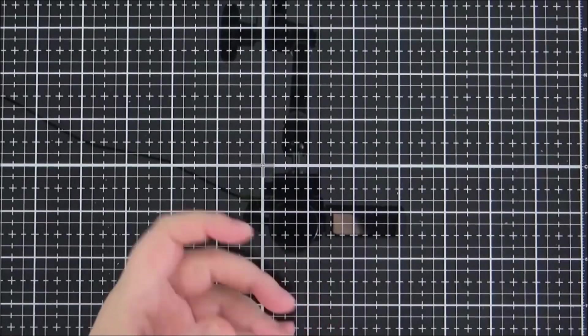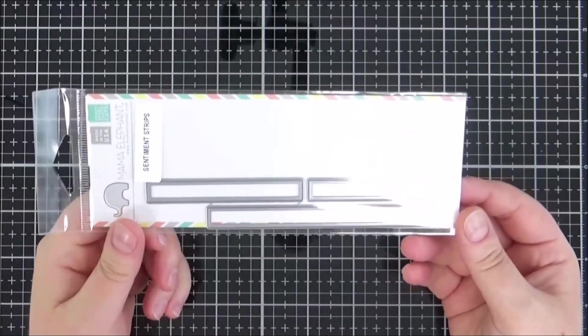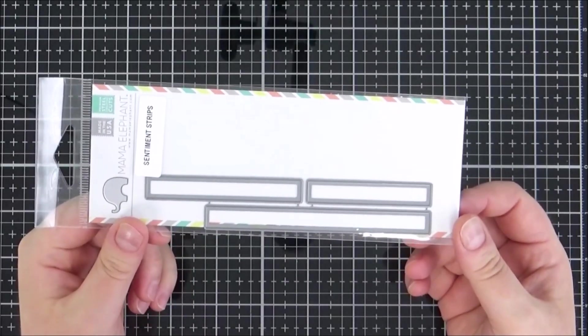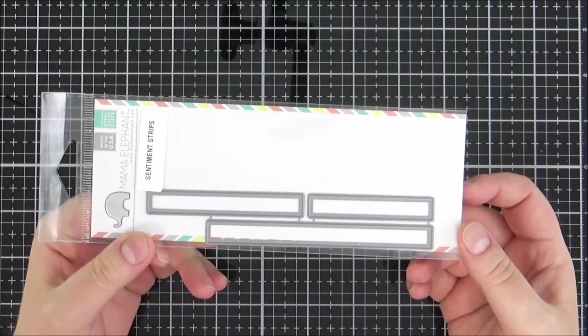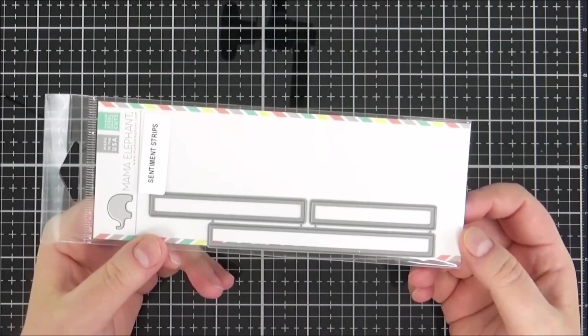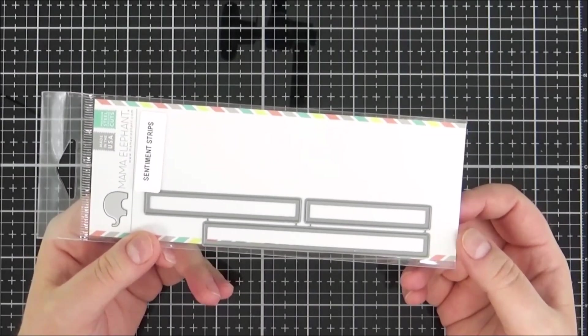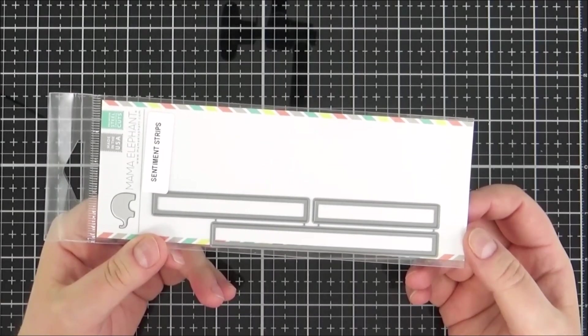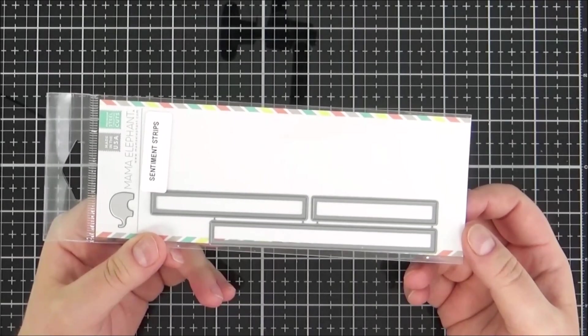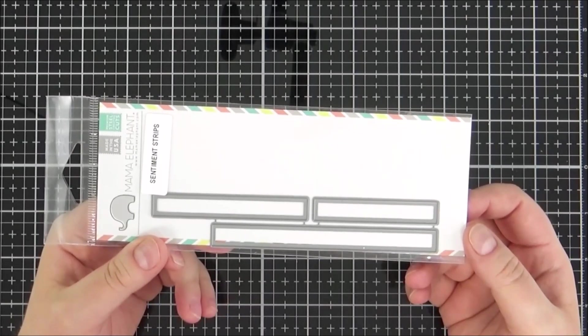First of all I made a small order from Dies to Die For and I picked up the sentiment strips from Mama Elephant. I have used sentiment strips for quite some time, the little sentiment dies, and I really really do like them. I've got a few different sets from Simon Says Stamp and also from MFT but I used them a lot and I thought I would pick up these ones from Mama Elephant as well.